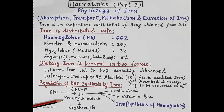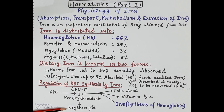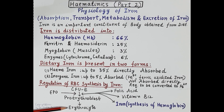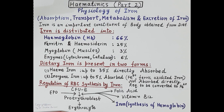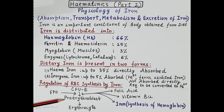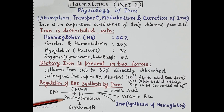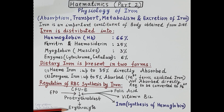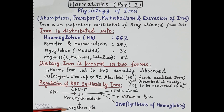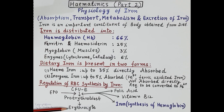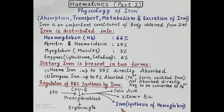These proerythroblasts undergo a series of division and differentiation and finally mature to produce erythrocytes, or red blood cells. For the development of proerythroblasts to erythrocytes, the stem cells require folic acid, vitamin B12, and iron. Iron is specifically required by the proerythroblast for the synthesis of hemoglobin.